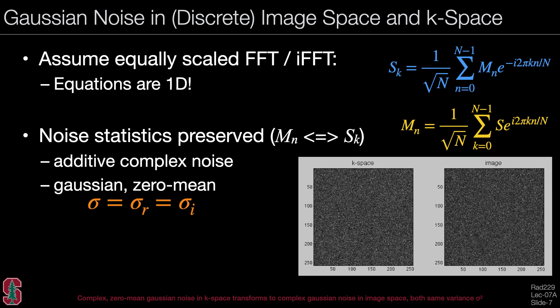Looking at how Gaussian noise propagates between k-space and image space, we can look at a scaled Fourier transform where the sum is scaled by one over the square root of n in one dimension. The noise statistics are preserved between the image domain and the k-space domain. You have additive complex noise that's Gaussian and zero mean. The sigma is equal for the real and imaginary components, and the sigma in the image domain and k-space domain will be identical.